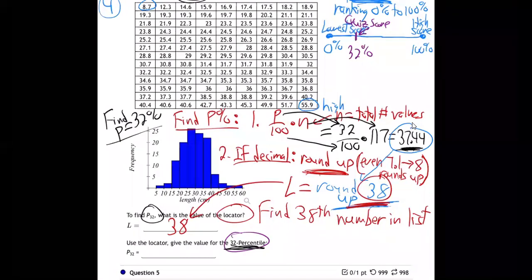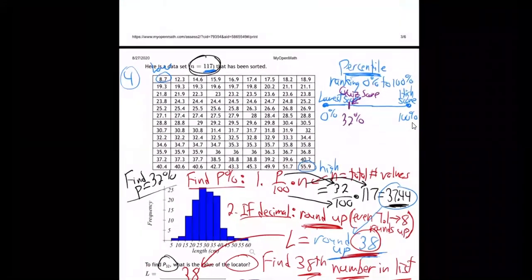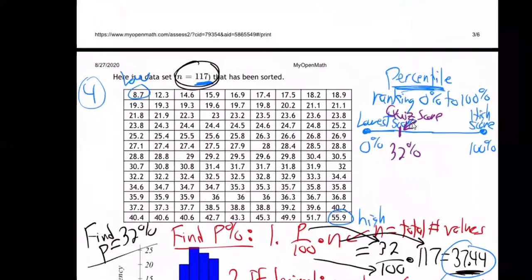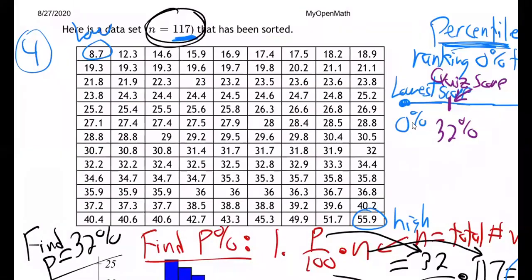And then in the second question, now use that locator to find the value in that spot. So now I'm going to go back up to the chart and I'm going to find the 38th number in the list. That will be our answer. Are you ready? Let's go do it. Let's go find the 38th. I'm going to look at this chart. Now how many numbers are there in this chart? I mean, there's 117, but I mean, how far across do they go? Let's see. So this is the first, second, third, fourth, fifth, sixth, seventh, eighth. They should have made it go 10, shouldn't they?